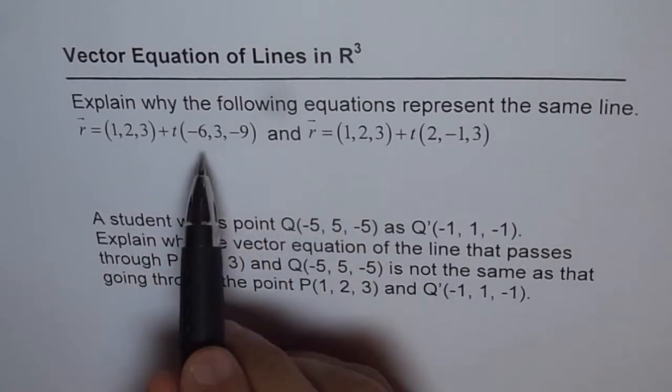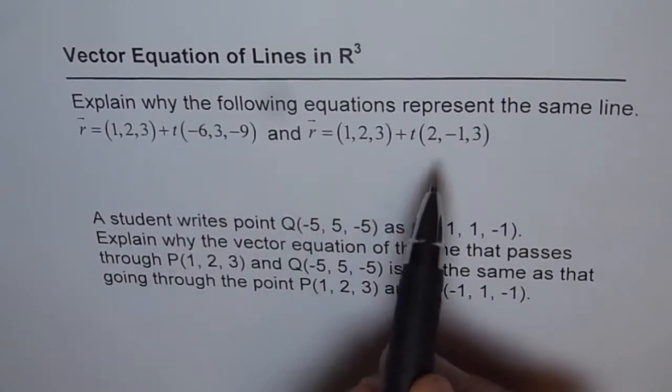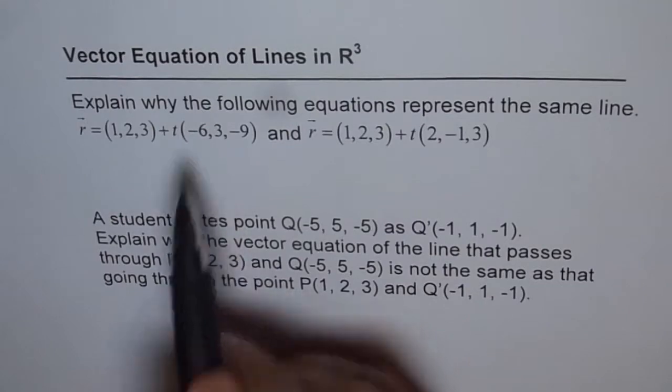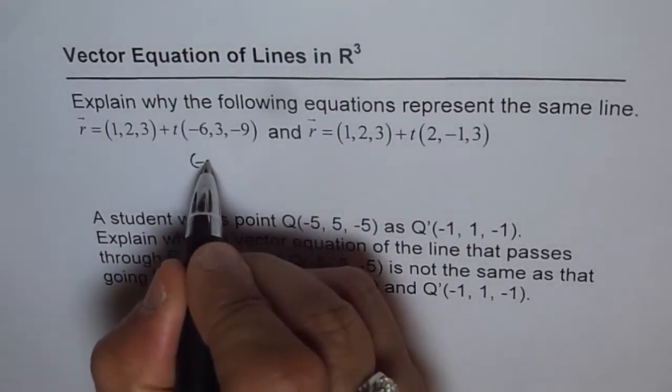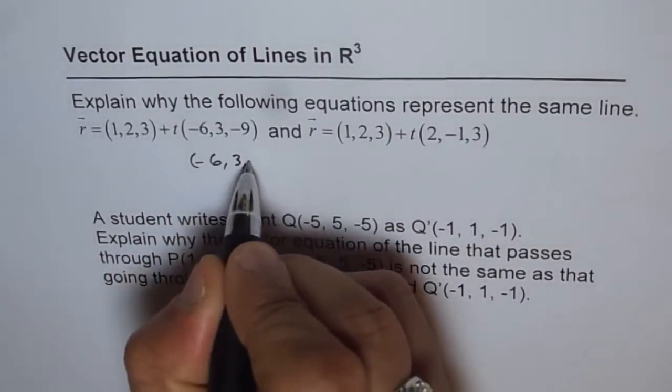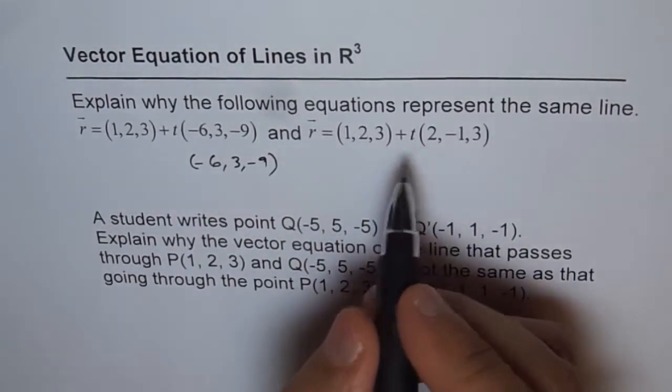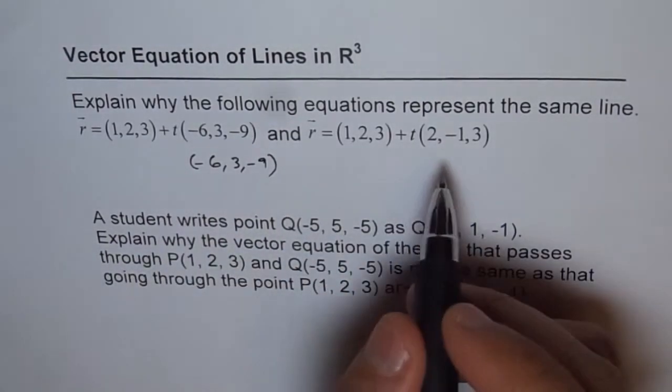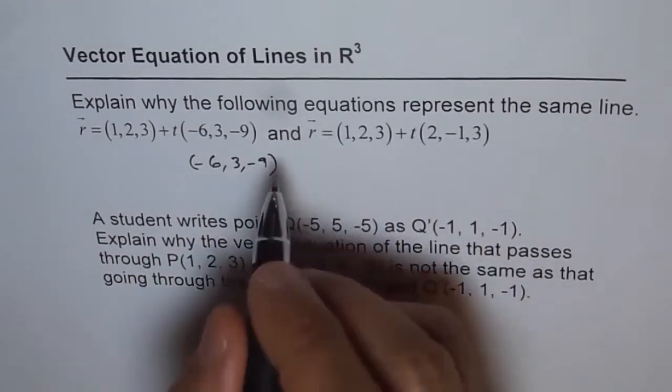So we observe if you multiply this by -3 we get that one. Since we know (-6, 3, -9), or if you can divide this by 3, you get this one.